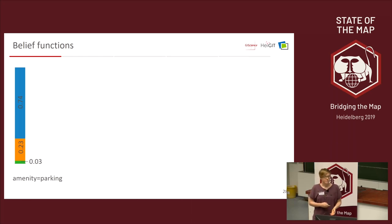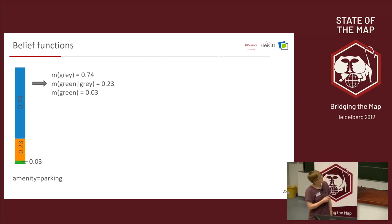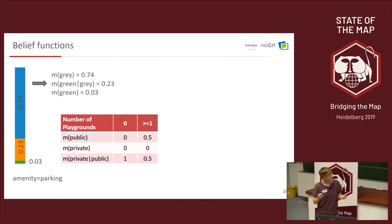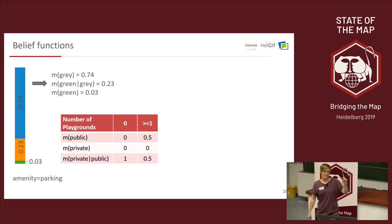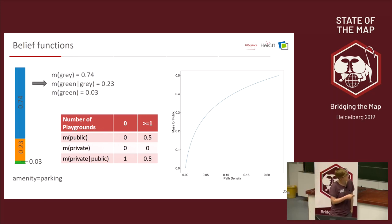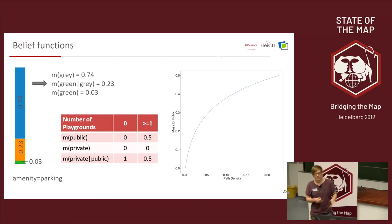Applied to our problem: from NDVI values, I derive a mass function — for example, 3% greenness for 'amenity=parking', 74% non-green, and 23% uncertainty. For playgrounds, if there's no playground mapped, I have no idea whether there isn't one or it wasn't mapped. But if there is a playground, I have some evidence of public access. With path density, the higher the path density, the higher my belief that it's public.